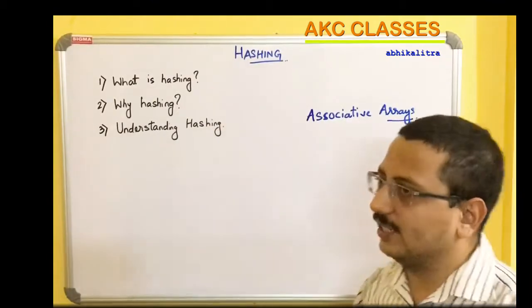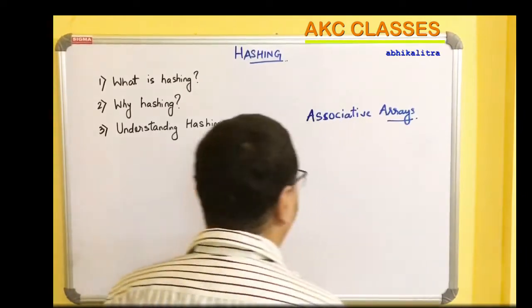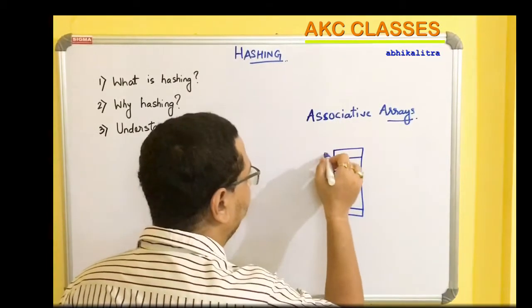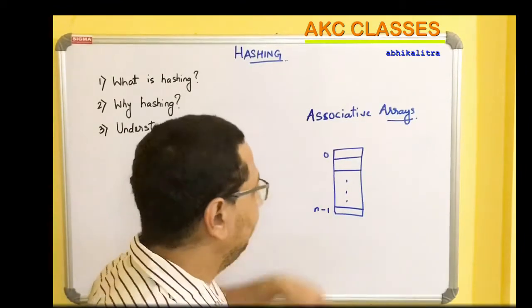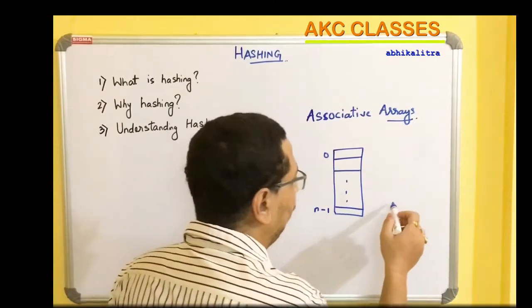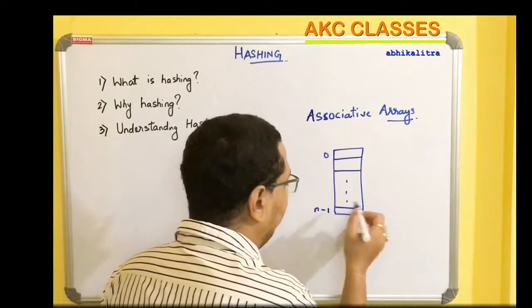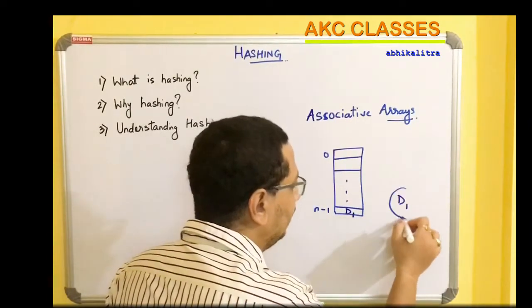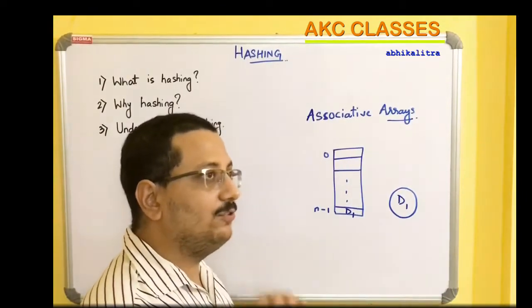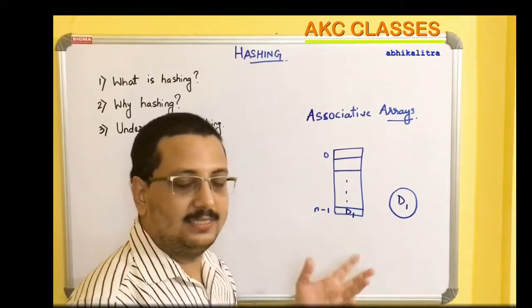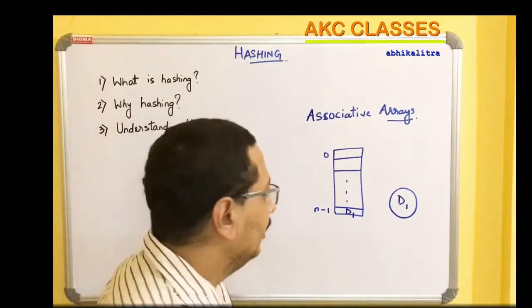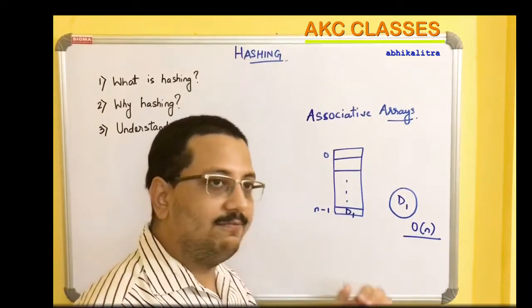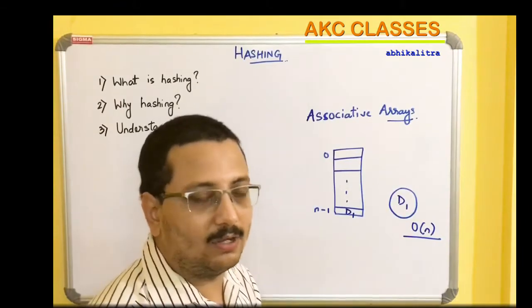So now, why hashing? If we are just using a simple array, this array will have several different indices starting from 0 to n minus 1, so there are totally n different elements that can be stored. Now if I want to find a certain element, say d1, stored at the last index of the array, I have to traverse the entire array to reach d1. This is known as the linear search technique, which requires O(n) time in the worst case, when the value is located at the last index of the array.